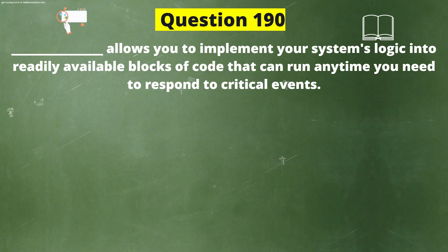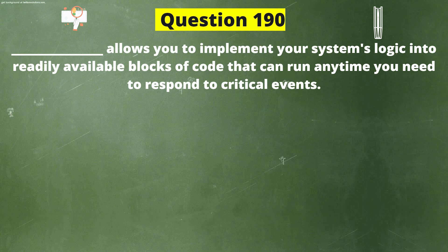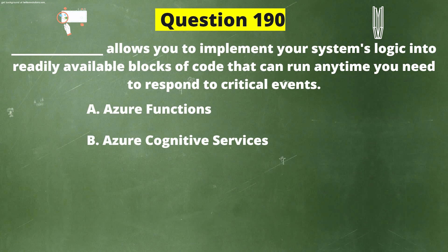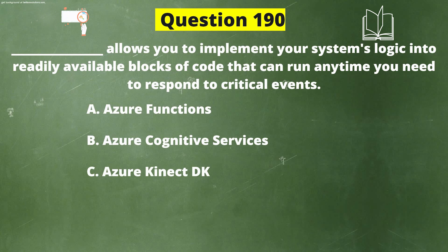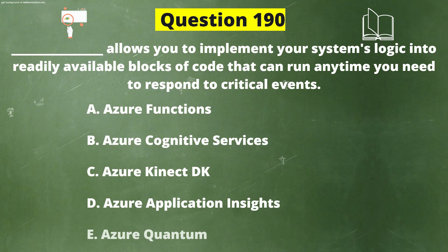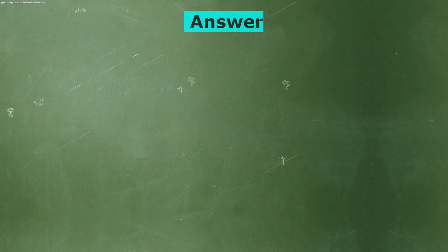Next question: Dash allows you to implement your system's logic into readily available blocks of code that can run any time you need to respond to critical events. The options are: A) Azure Functions, B) Azure Cognitive Services, C) Azure Connect SDK, D) Azure Application Insights, E) Azure Quantum. The correct answer is option A: Azure Functions.